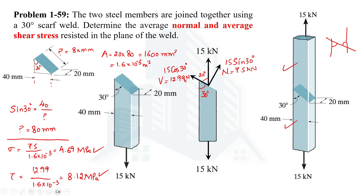We are now successful in determining the average normal stress and average shear stress acting on the plane of the weld joining these two members together. That's all from this video. I believe you got the understanding of determining the average normal and average shear stress acting on any plane loaded by external forces. If you still feel any difficulty, please let me know through the comment section. Thank you for watching.